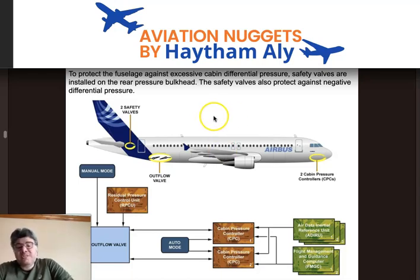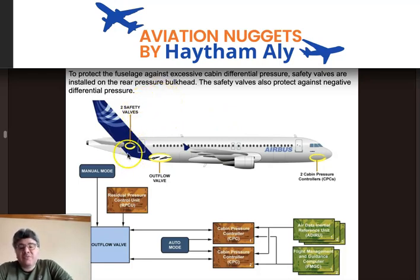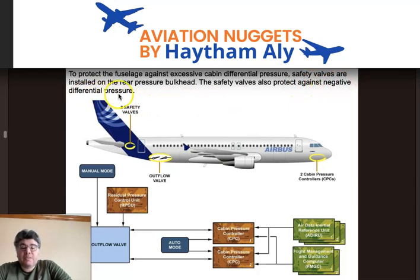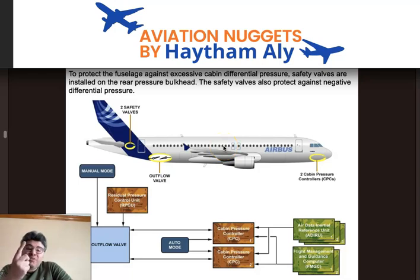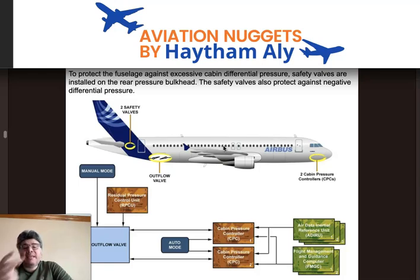The two safety valves installed on the rear pressure bulkhead protect the fuselage against both positive and negative differential pressure, covering both scenarios of over-pressurization and negative pressure.